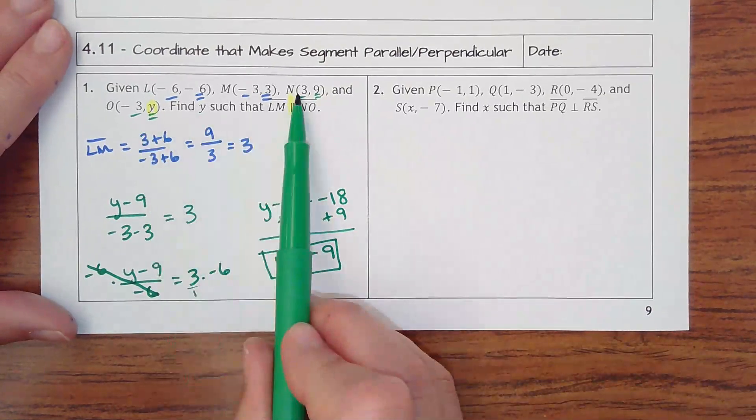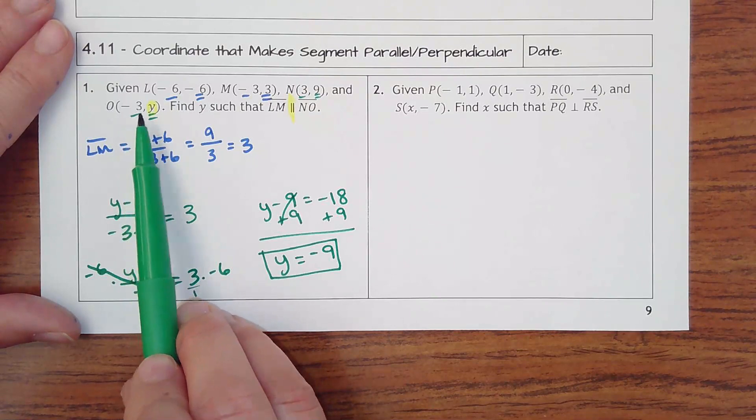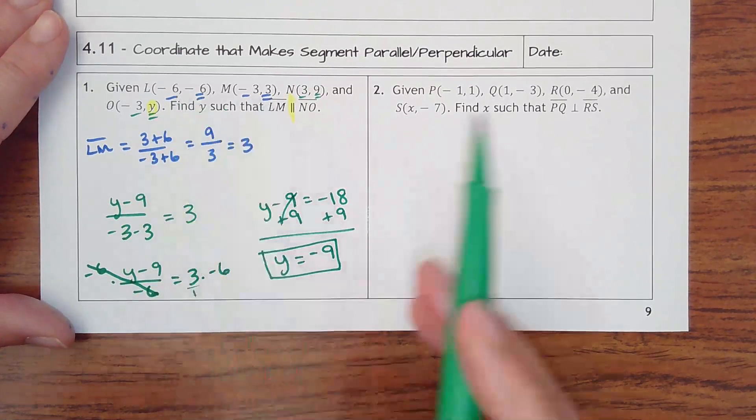So if I were to find the slope again of these two points, now knowing that this is at negative 3, negative 9, it should equal the same slope as LM.